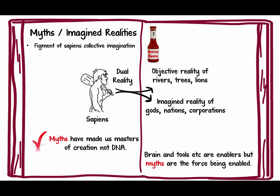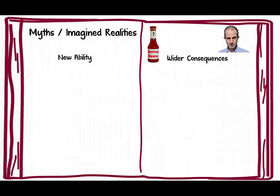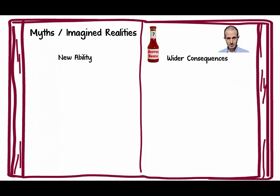Although the brain and tools are enablers, the myths are the force that are being enabled. Sapiens had a dual reality: the objective reality of rivers, trees, and lions, but then sapiens created an imagined reality of gods, nations, and corporations.